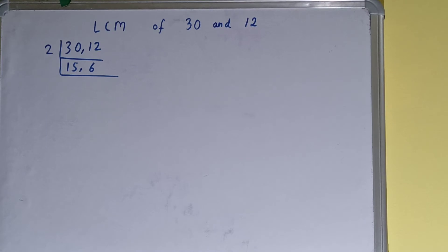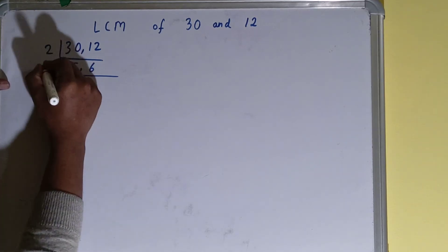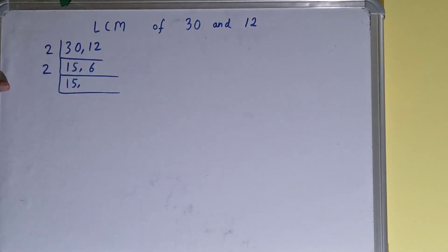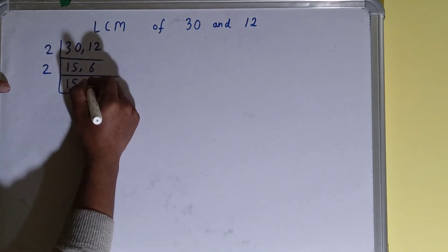Now if we check, is any of the numbers divisible by 2? Then only the second number is divisible by 2, not the first one. So we'll divide and the first one we'll just copy down. The second number 6 will become 3 on dividing.